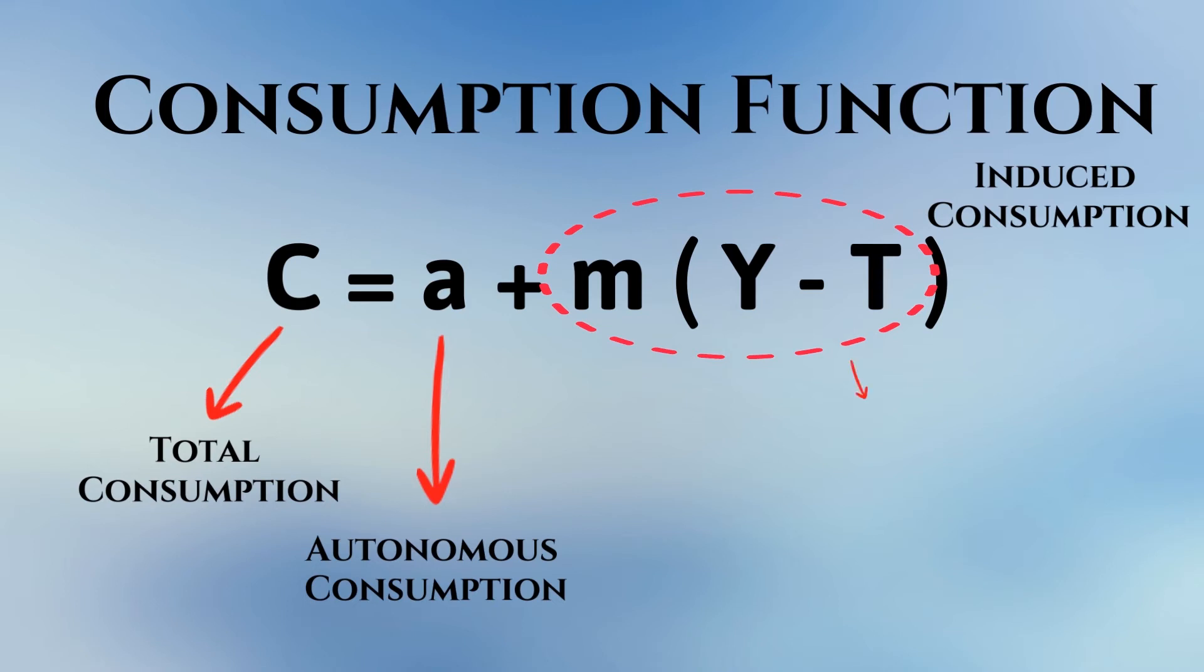Y minus T is called disposable income. This is the actual income that can be used for consumption after deducting the taxes.